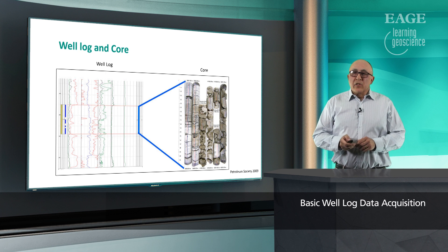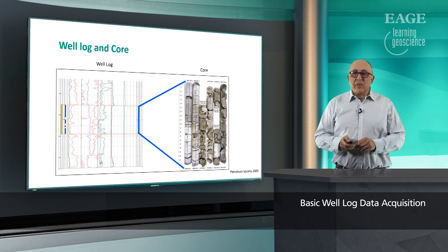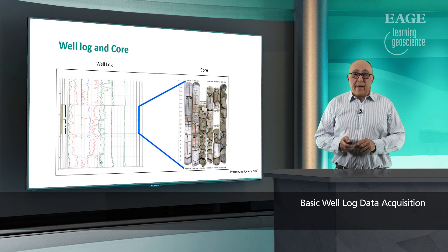As you can see from this slide, core samples are taken at intervals and they only cover about 30 meters, so it's quite a small coverage. Coring is very expensive, so geologists need to pick their intervals with care.